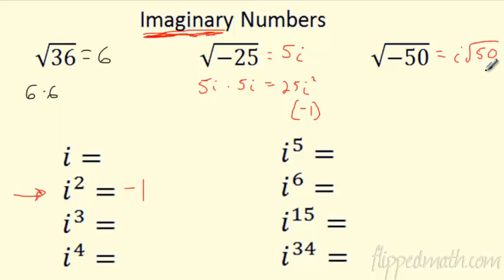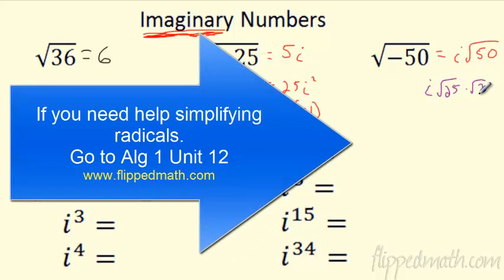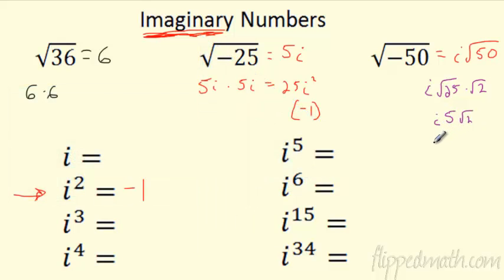We're pretty good at reducing these radicals. What does 50 break down into? It breaks down into 25 times 2. And why did I pick 25? Because the square root of 25 is 5. So really, this turns into i·5·√2. We always put the number first, so this is actually 5i√2. The square root of negative 50 is 5i√2.